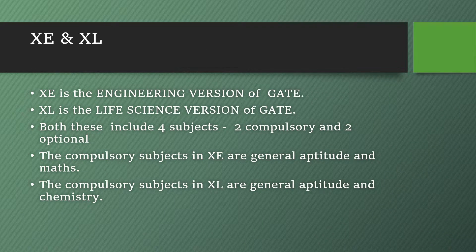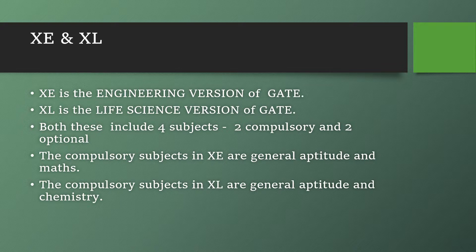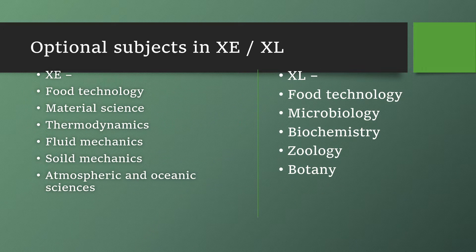GATE is conducted in two basic themes or patterns. Most students are either categorized into engineering subjects — mechanics, thermodynamics, physics, etc. — while a few are interested in biological sciences like microbiology, biochemistry, zoology, and botany. GATE gives you the choice to opt for your preferred theme. XE is the engineering version of GATE and XL is the life science version. Both papers have four subjects, of which two are compulsory and two are optional. The compulsory subjects in XE are General Aptitude and Mathematics, and in XL they are General Aptitude and Chemistry.